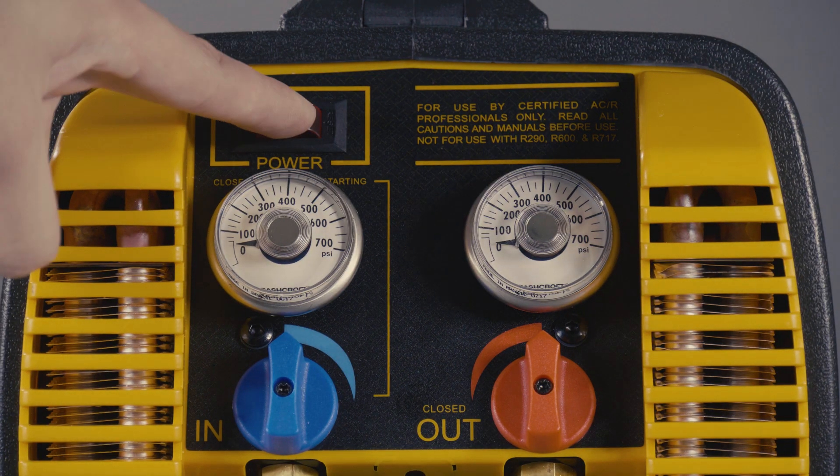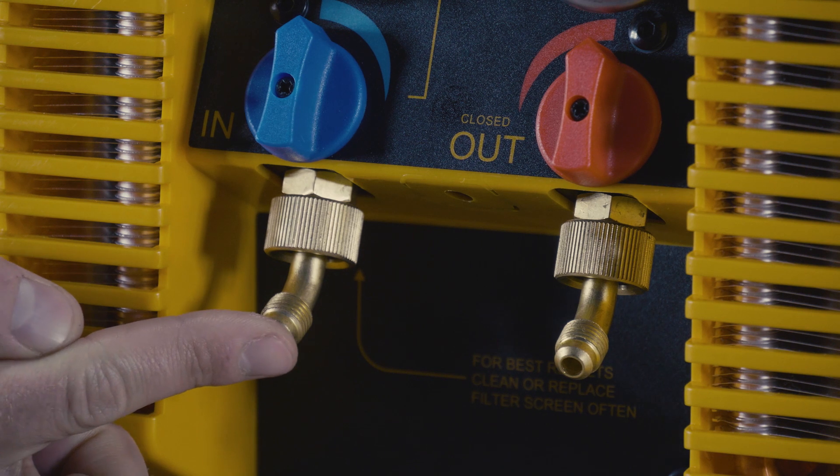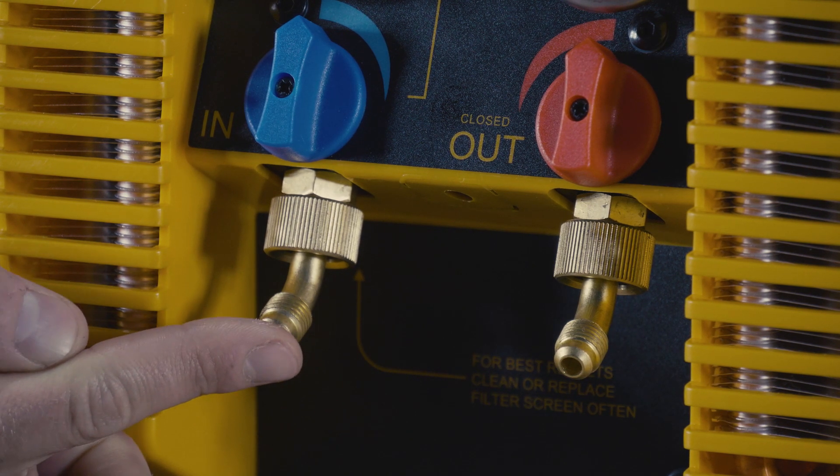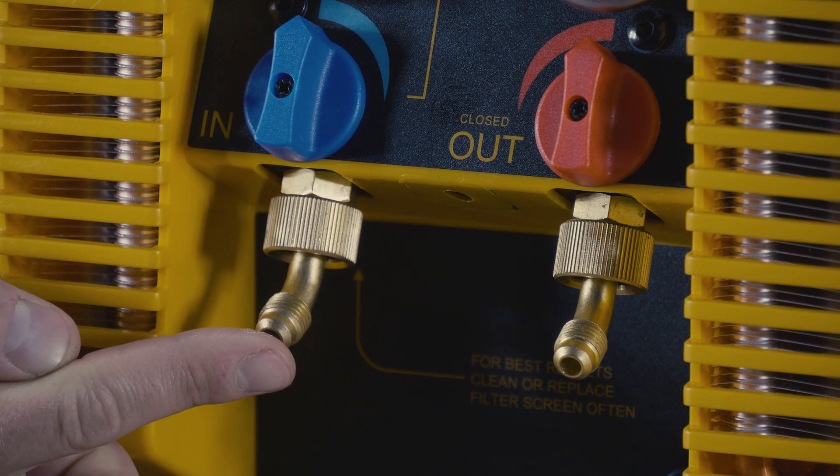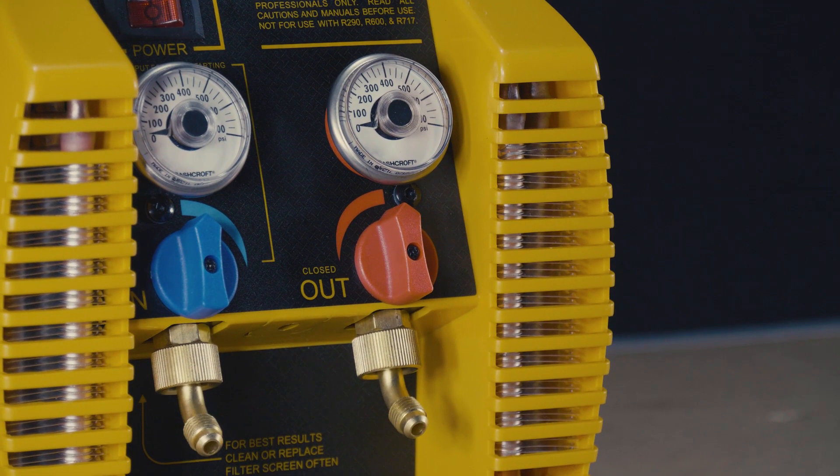With both valves open, turn on the power to the G5 Twin. You should feel suction on the input port and pressure should build at the output port. If the machine sounds like it is running normally, you can proceed with the test.